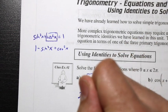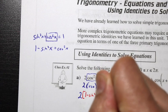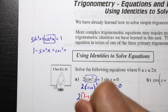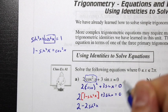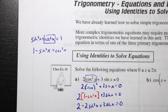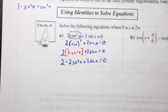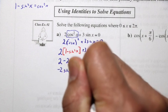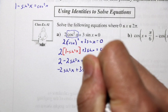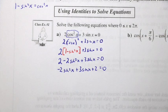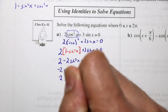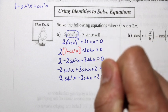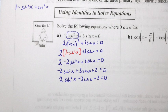We can replace cos²x, giving us 2(1 - sin²x) + 3sin x = 0. Expanding: 2 - 2sin²x + 3sin x = 0. Putting it in ax² + bx + c form: -2sin²x + 3sin x + 2 = 0. Multiplying by -1 gives 2sin²x - 3sin x - 2 = 0.